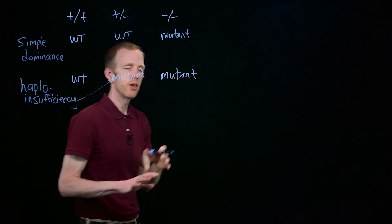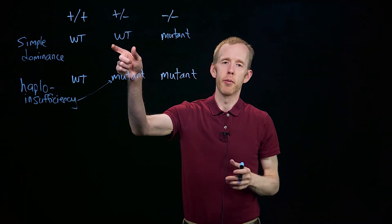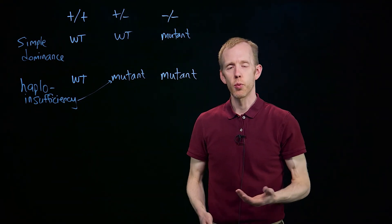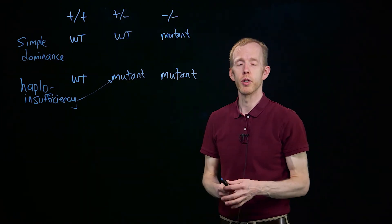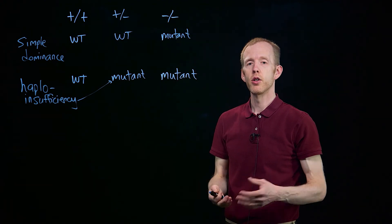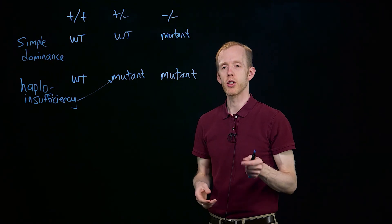And what this concept means, at its most simple, is that the reason that in simple dominance, a heterozygote carrying one mutant copy of a gene is wild type is because they still have one chromosome that has the normal gene on it, which presumably produces the normal protein, and it works as it normally would to produce the enzyme or structural protein, or whatever it may be, to help the organism function.